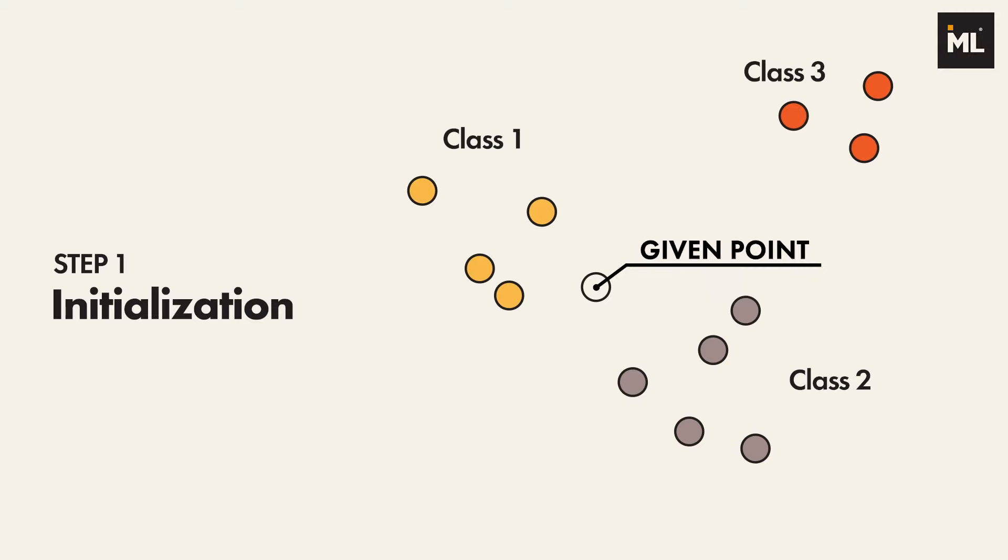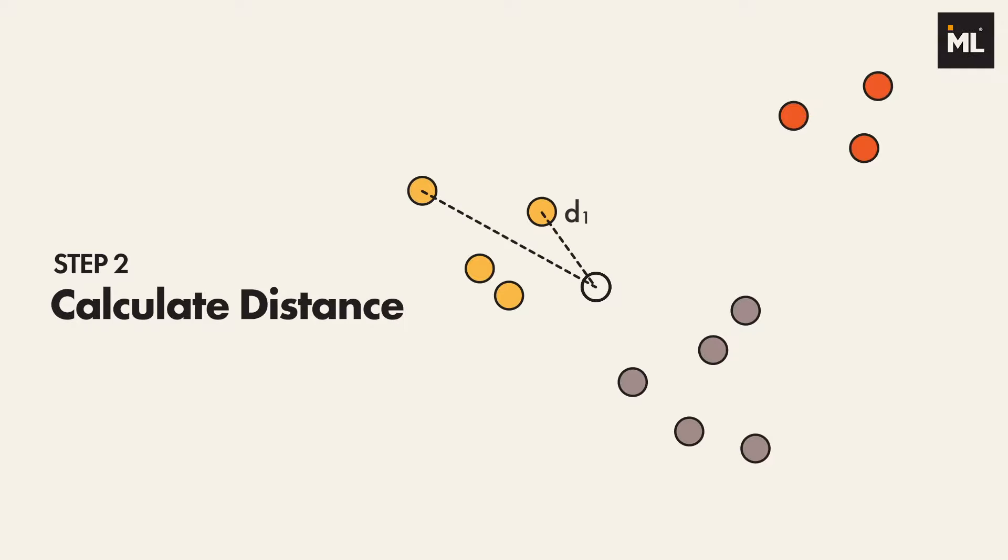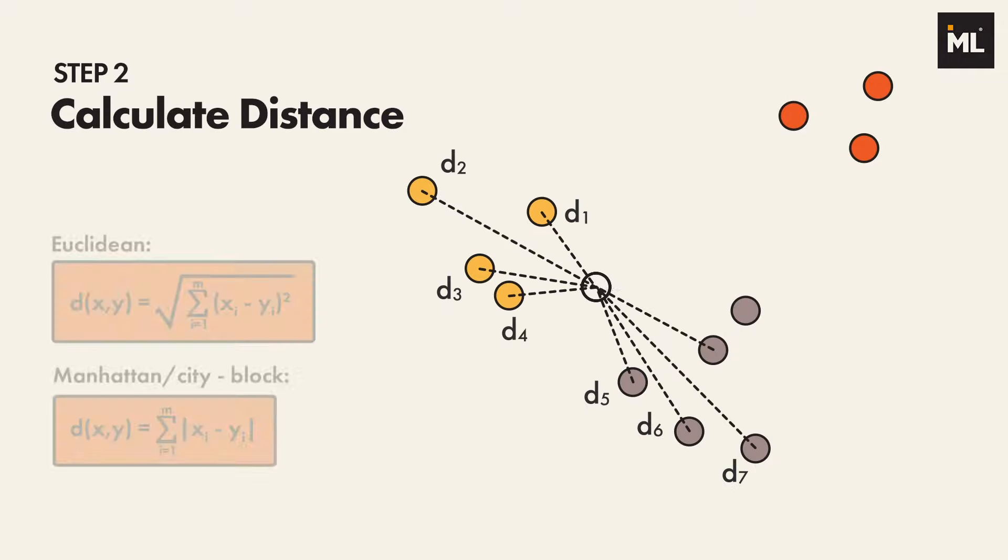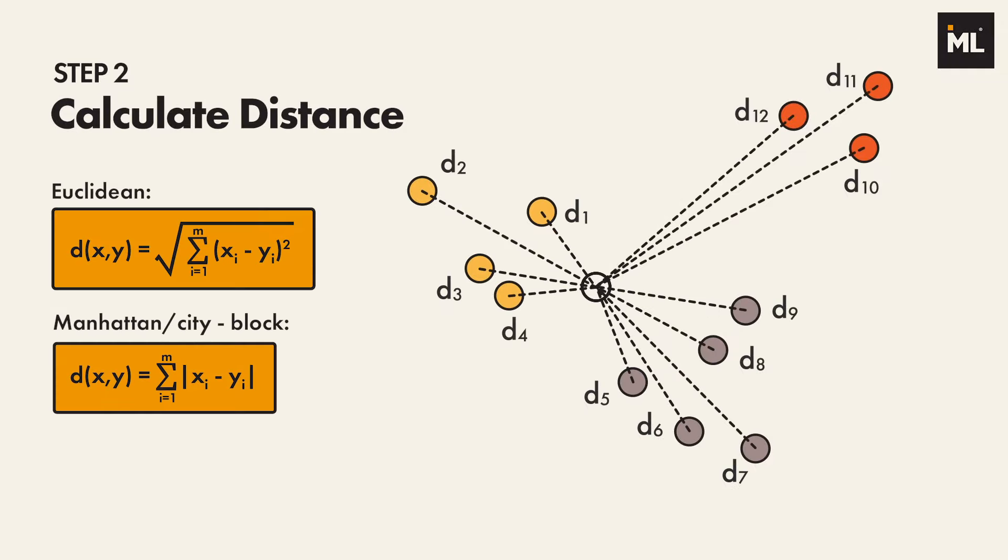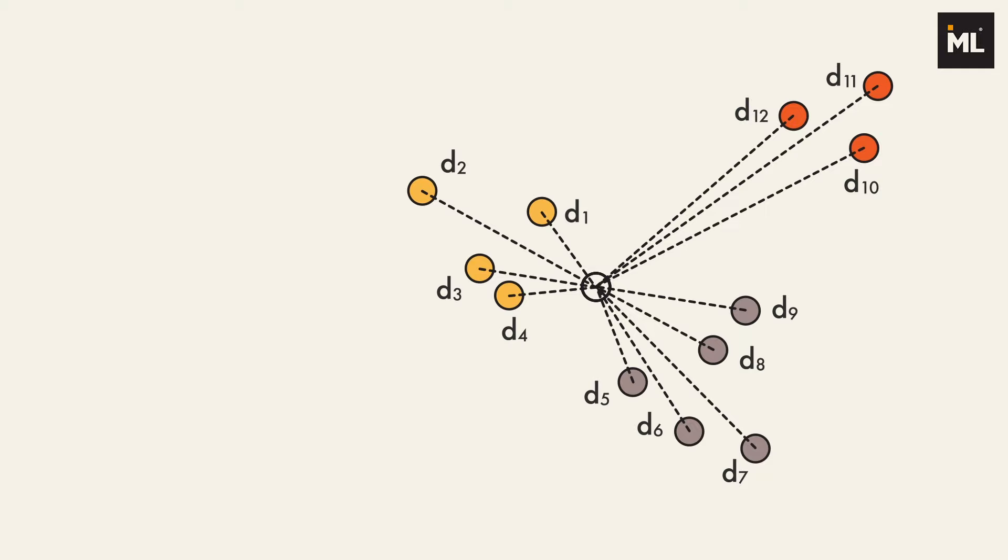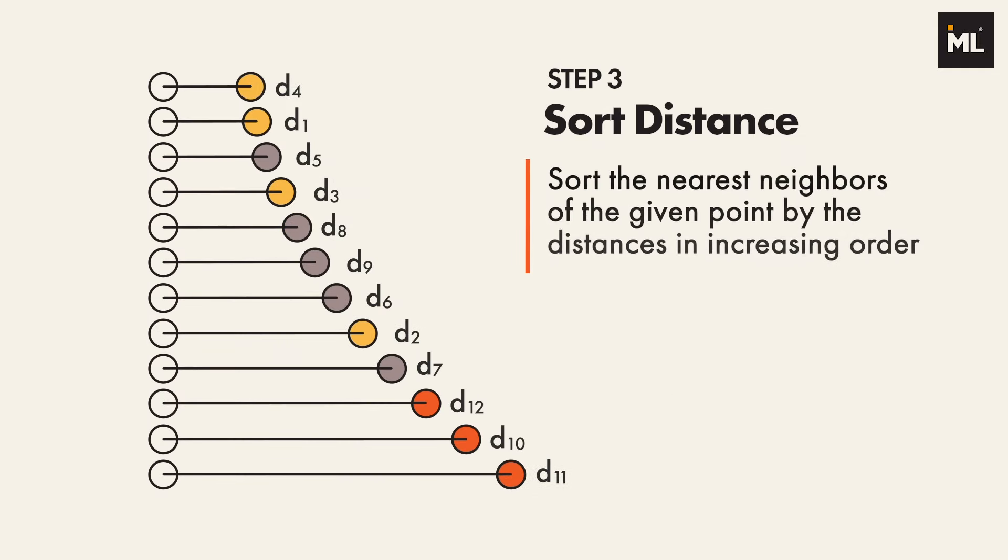In order to find the K-nearest neighbors of the given point, we need to calculate the distance between the given point and all other points. There are many distance functions, but Euclidean is the most commonly used one. Then we sort the nearest neighbors by distance in increasing order.